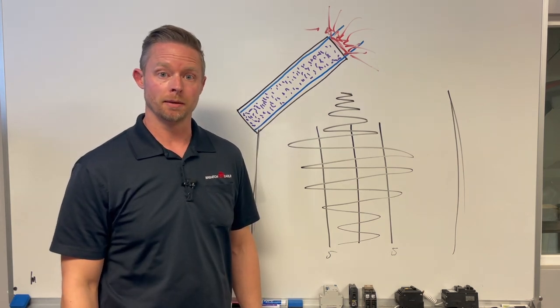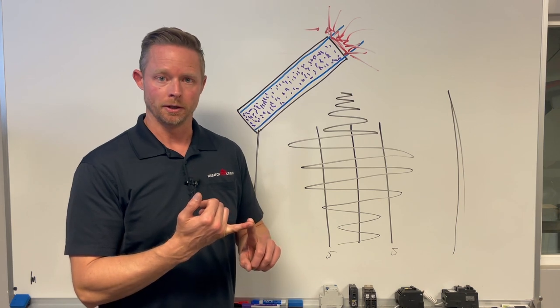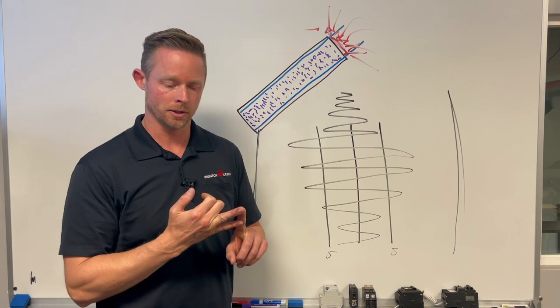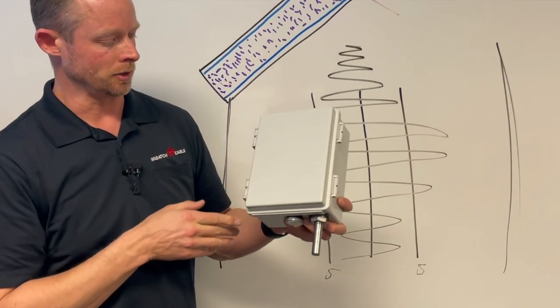GFEP loads can be placed anywhere in the system. You can put them in as the breaker. You can also put them in line on the heat cable as a GFEP pigtail. They make those. You can also integrate them into a control box as you see here.